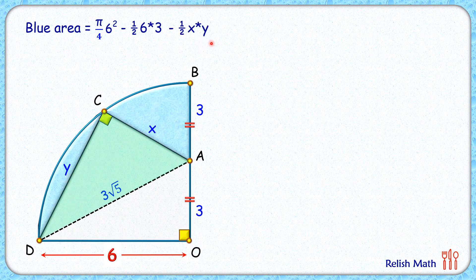Now in this equation we have to find value of x and y. For that we need two equations in two variables. Our first equation we are getting from here. Applying Pythagoras theorem, we will get x square plus y square is 3 root 5 square.